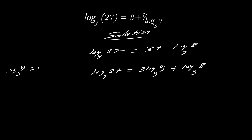Now we have the same base. The next step is to get rid of the coefficients — a coefficient of a log becomes the power. So 3 log y to base y is simply log y³ to base y; the coefficient 3 becomes the power.